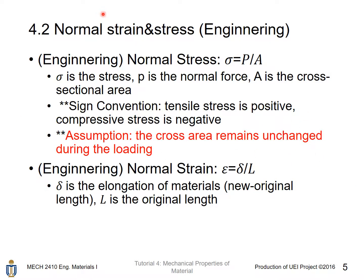Normal strain is defined as delta over L, where delta is the elongation of the material — that is, the instantaneous length minus the original length — and L is the original length.